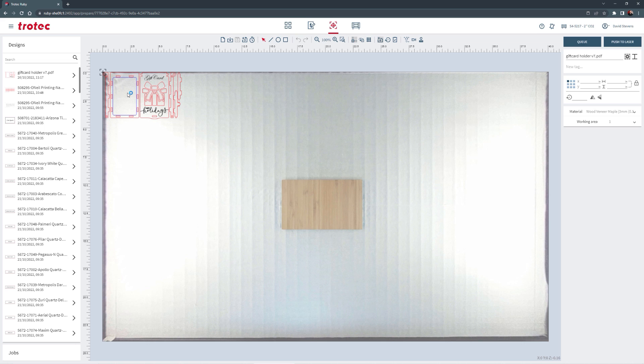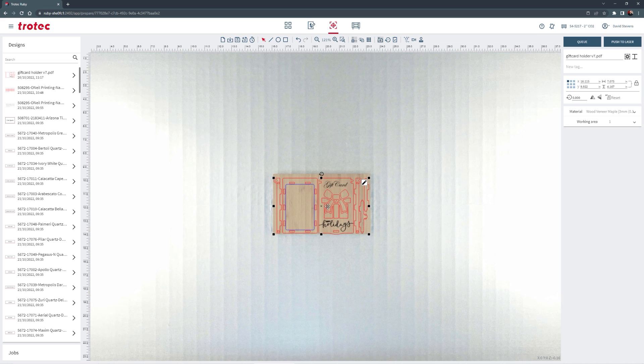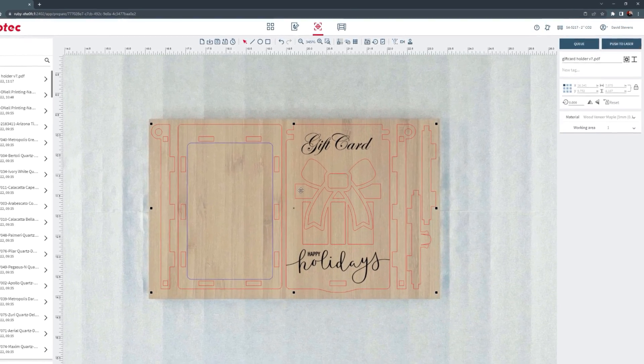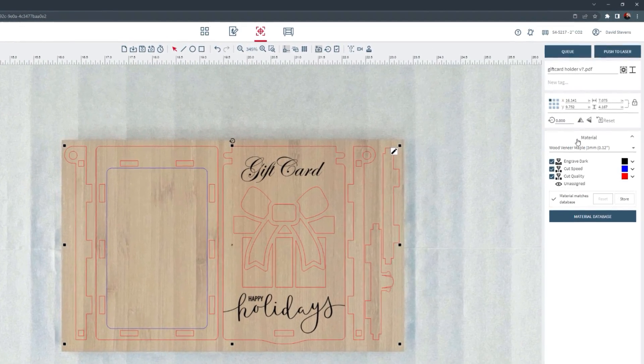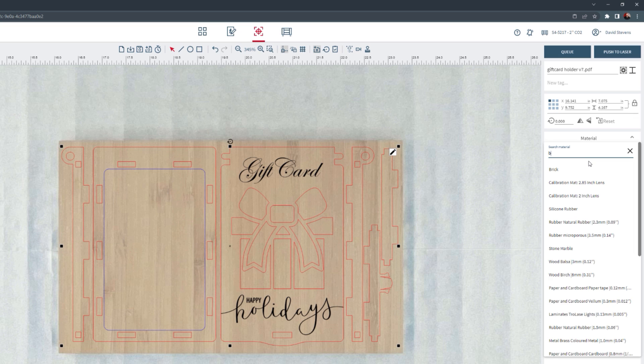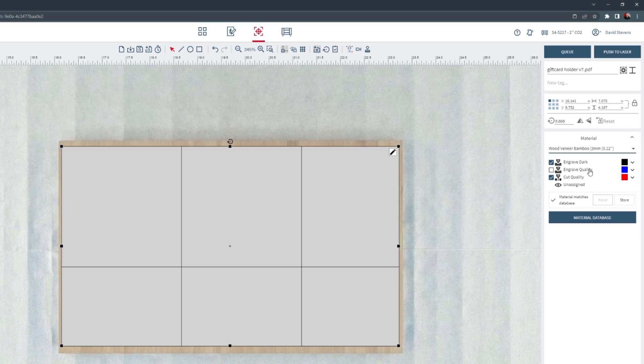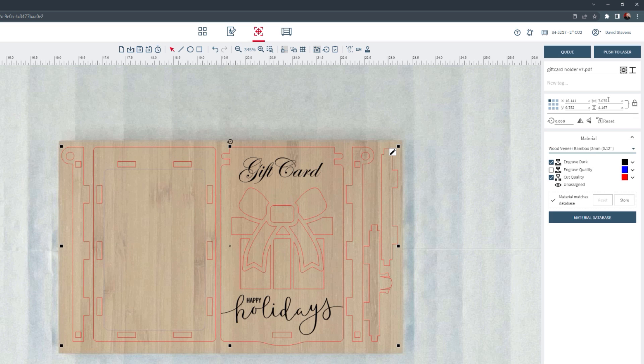Use the vision design and position camera to place the design over the material, zooming in for accuracy. Select the material from the materials database. In this example the wood, veneer, bamboo is used. Then select push to laser.